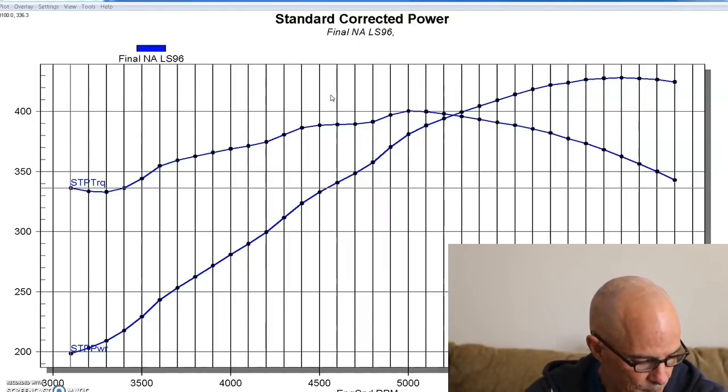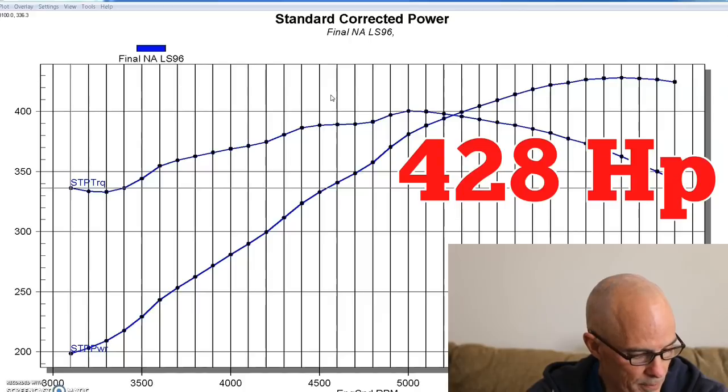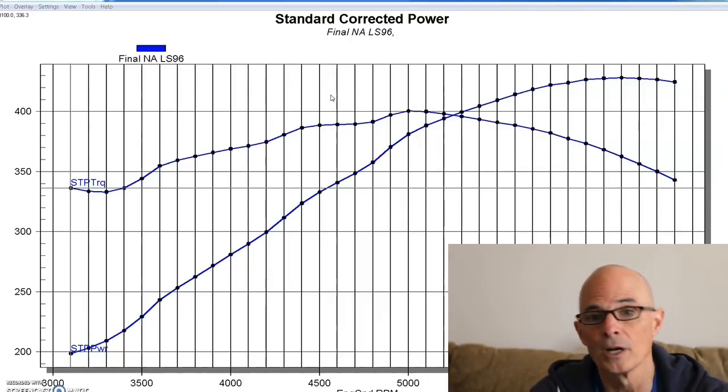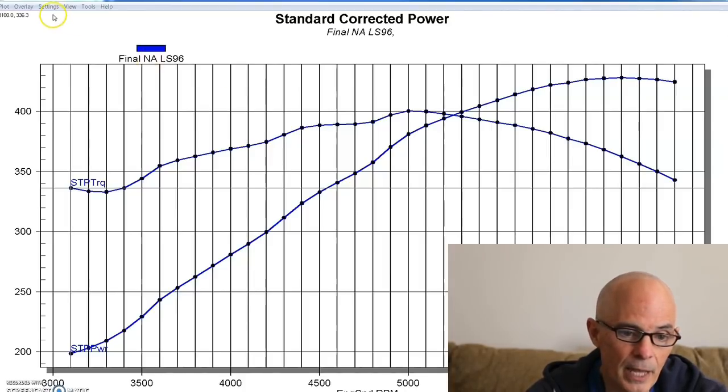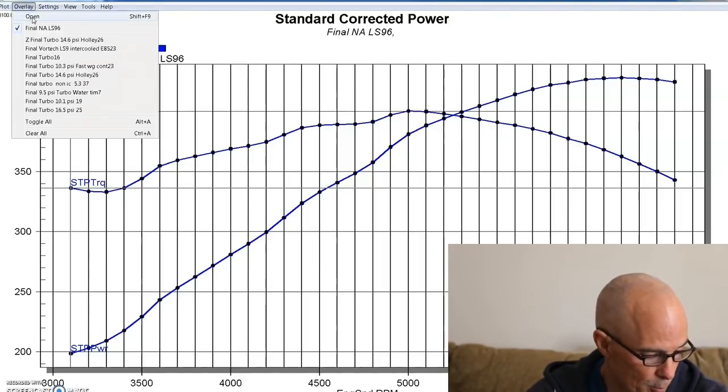And on this application, we installed a factory LS9 cam because we were doing testing for a variety of different things. But on this combination, it was running an LS9 cam. So the NA combination, before we added boost from our VORTEX supercharger, was 428 horsepower and an even 400 foot-pounds of torque.